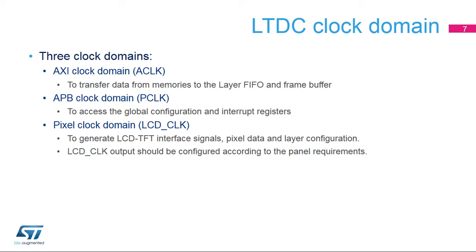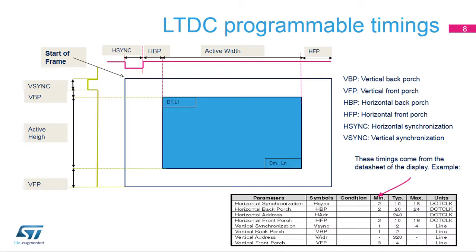The LCD-CLK output should be configured according to the panel requirements. To interface with TFT panels, all timings are programmable through the LTDC controller. These timings come from the TFT panel data sheet and are: VBP or Vertical Back Porch, VFP or Vertical Front Porch, HBP or Horizontal Back Porch, HFP or Horizontal Front Porch, HSYNC or Horizontal Synchronization, and VSYNC or Vertical Synchronization.